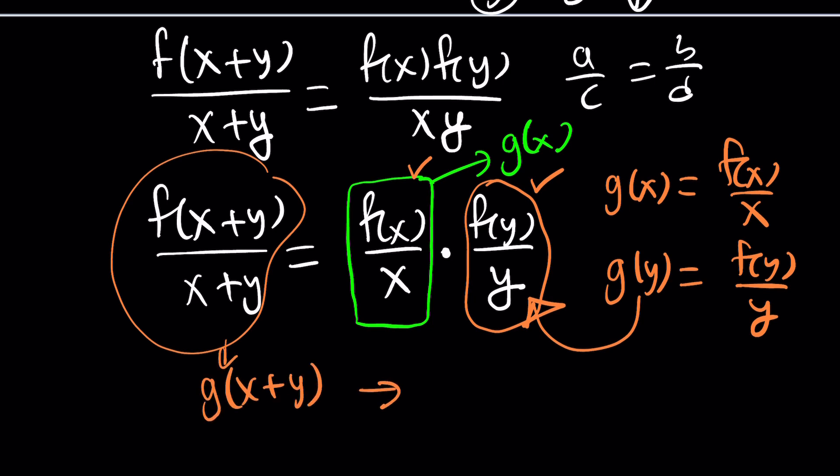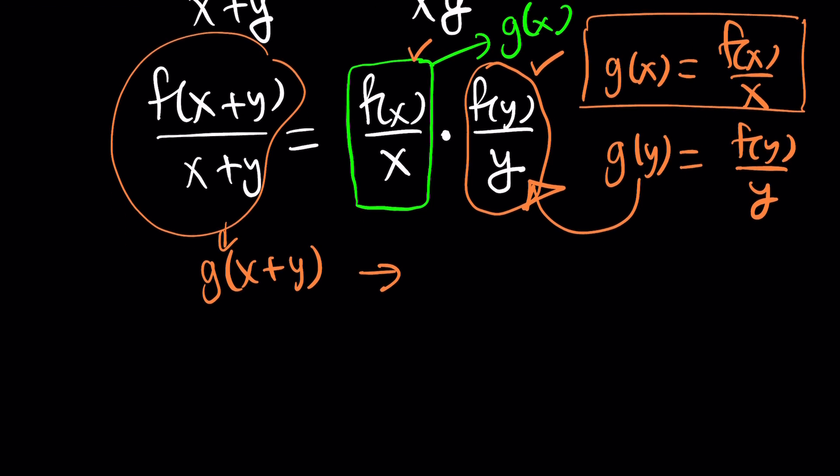But, it gives us that this is g of y. If this is g of x, then this is g of y. And, more importantly, this is g of x plus y. And, you're like, why? Because, if you replace x with x plus y, you get g of x plus y, which is f of x plus y divided by x plus y. Does that make sense? So, writing our function equation this way is a huge advantage. First of all, I just want to emphasize that.